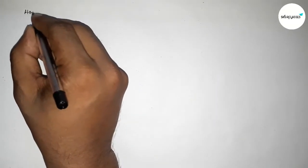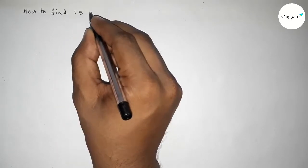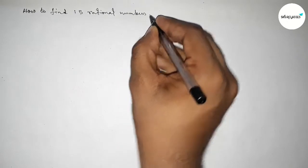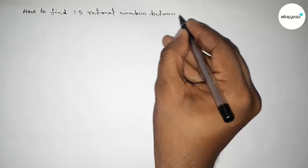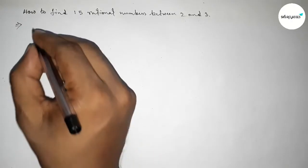Hi everyone, welcome to SI Share Classes. Today in this video we have to find out 15 rational numbers between 2 and 3. So let's start the video. First of all, let's solve this problem. So here given two numbers, 2 and 3.